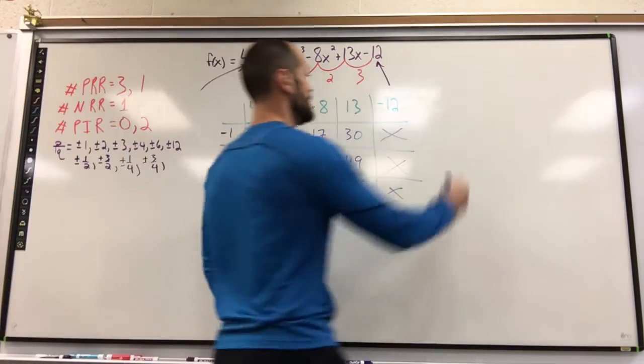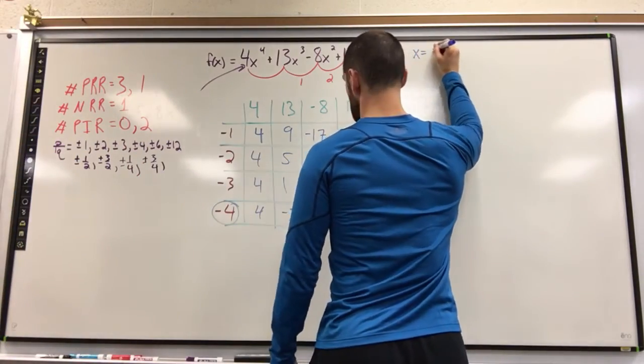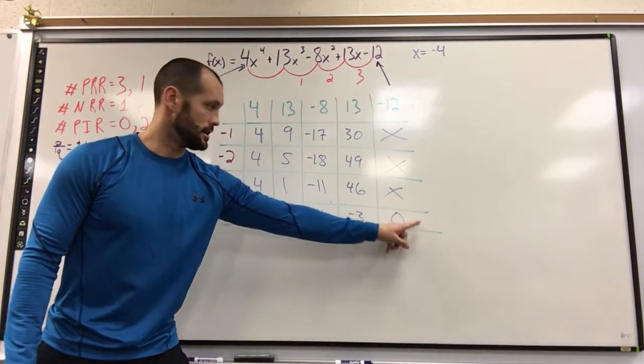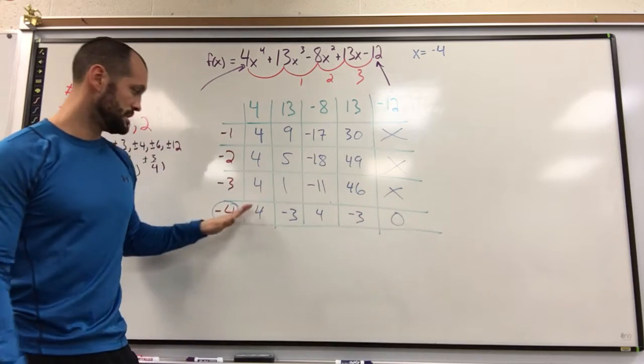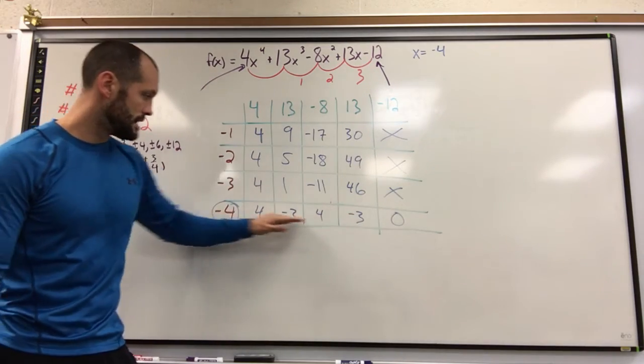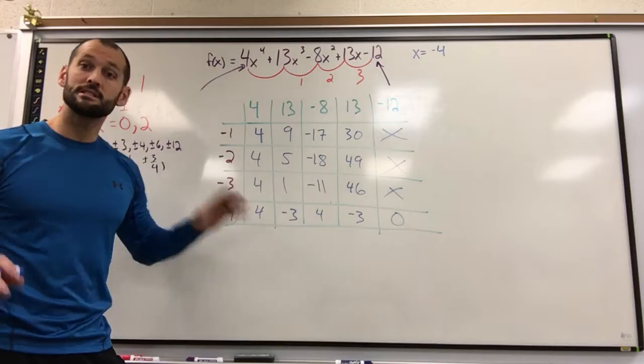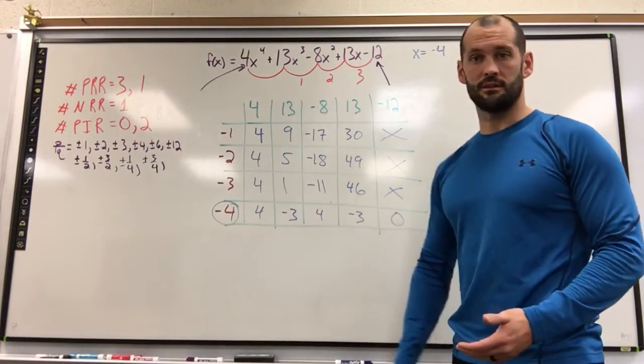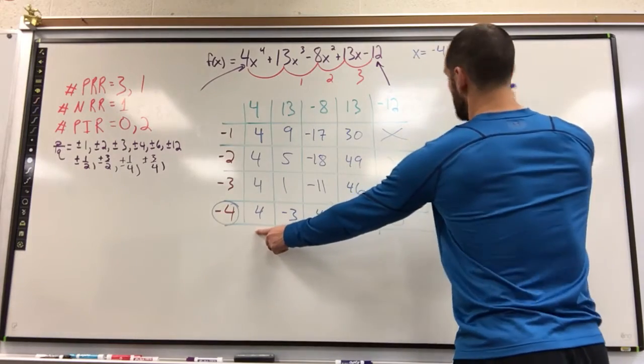Negative 4 is one of my roots. So if I'm solving this, I know one of my roots is negative 4. So we have a zero remainder, which means this is a root, which means if we divide by negative 4, this will give us our new polynomial. Let's take a look at our new polynomial, because you have to reset. Once you find a root, you have to reset with what's left.